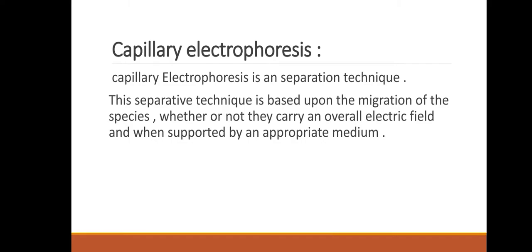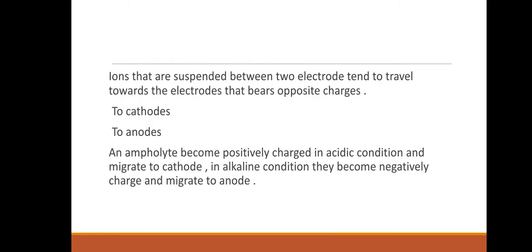There are two electrodes: the anode and the cathode. In capillary electrophoresis, there is a movement of ions. Ions suspended between the two electrodes tend to travel towards the electrode bearing the opposite charge.